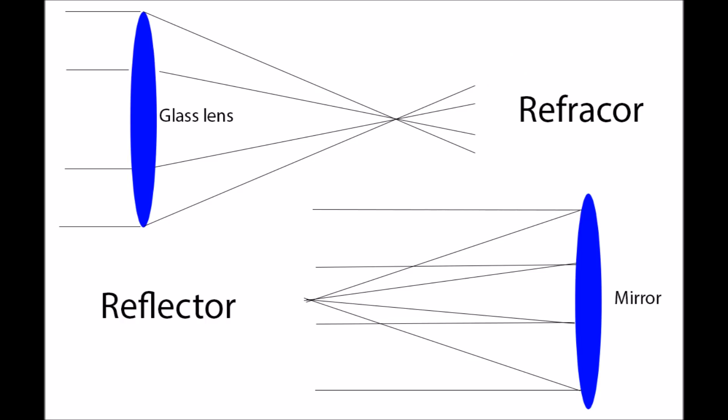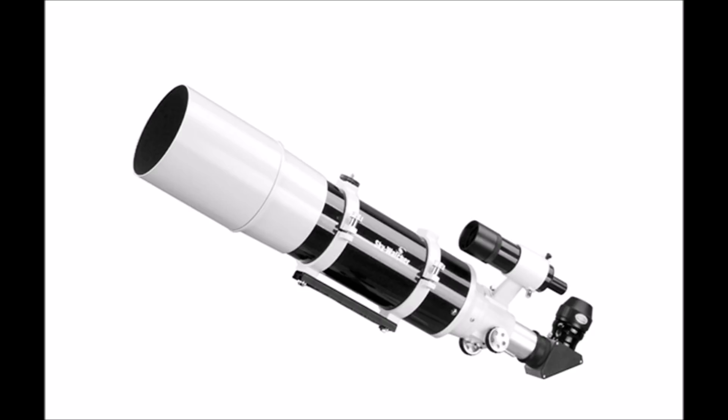Okay, so now we've got that out of the way, we can talk about the main types of telescopes. Essentially there are two different types of telescopes. Refractors and reflectors. Refractors are what you think of when you think of a telescope. They have the glass at the front, long and slim, and they have the eyepiece or the camera at the back.